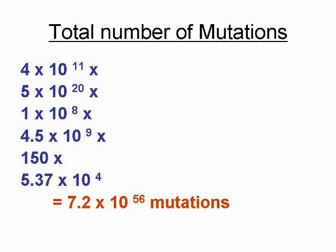Bacteria usually divide every 9.8 minutes, which is equivalent to 5.37 × 10^4 divisions per year. The total number of mutations therefore would be 4 × 10^11 × 5 × 10^20 × 1 × 10^8 × 4.5 × 10^9 × 150 × 5.37 × 10^4, which equals 7.2 × 10^56 mutations.